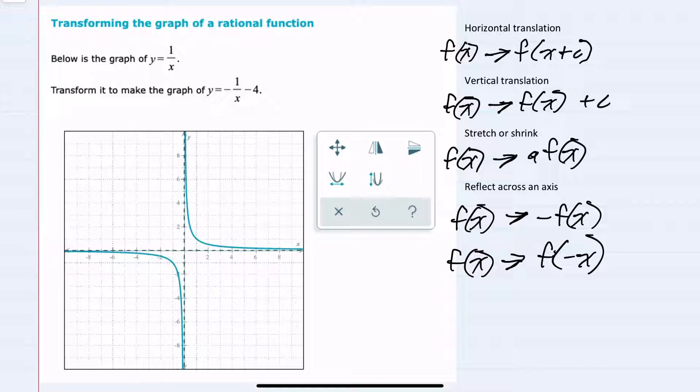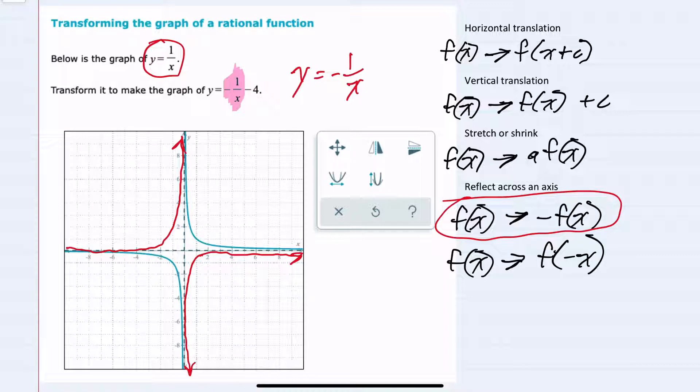So looking at this function, I first notice that we have y equals negative 1 over x. Considering our original function graphed here is y equals 1 over x, this is the opposite. So this would flip our graph over the x-axis. And if I were to take the part underneath the x-axis, it would flip up. The part above the x-axis would flip down. So in red here, we have y equals negative 1 over x.